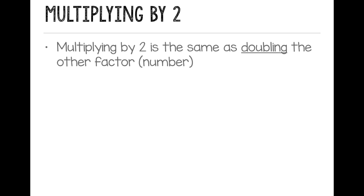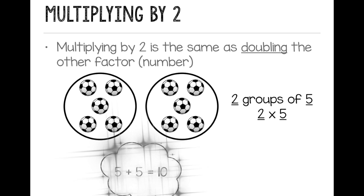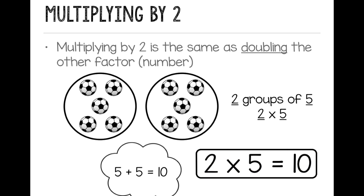So let's start with multiplying by 2. Multiplying by 2 is the same as doubling the other factor or the other number. If I have 2 groups of soccer balls, and each group has 5, I have 2 groups of 5, or 2 times 5. So I can think in my head, 5 plus 5 equals 10. So I know the answer to my equation is 2 times 5 equals 10. I doubled the other factor. I doubled 5.